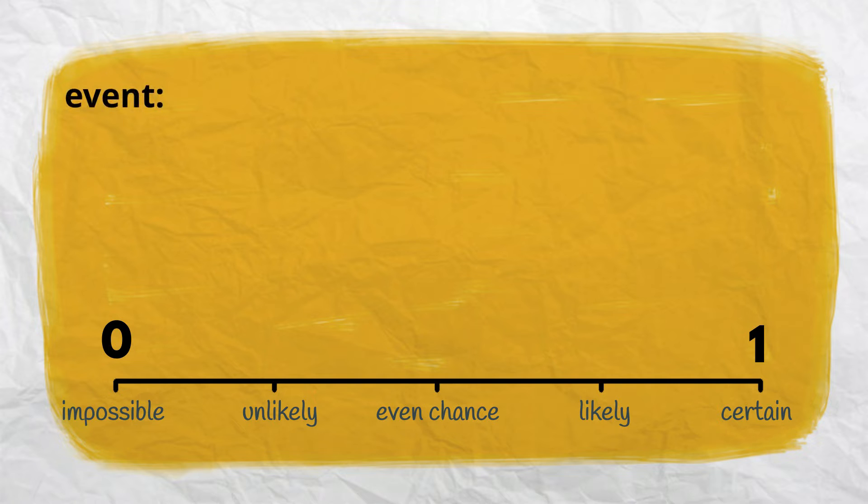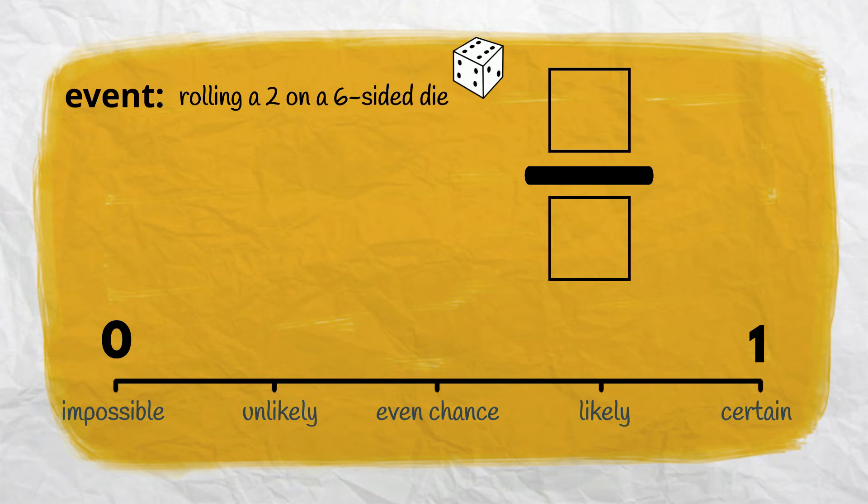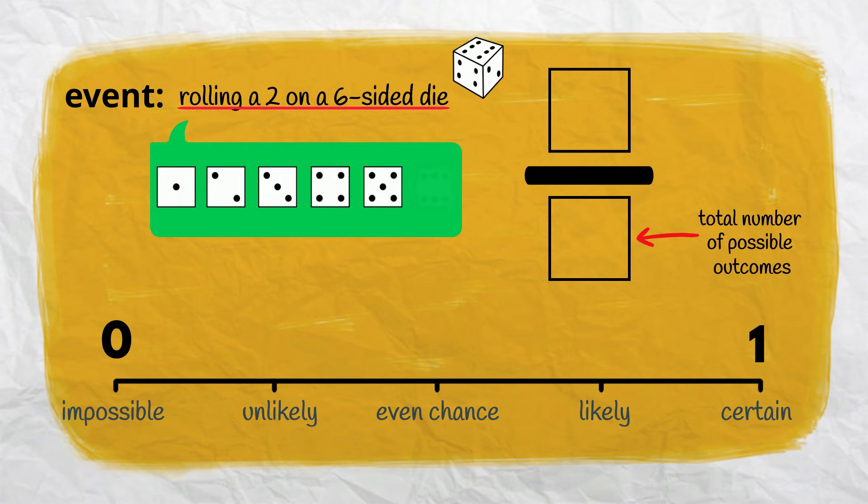Let's look at how we can express probability as a fraction, starting with this event: rolling a 2 on a six-sided die. Within the fraction, the denominator shows the total number of possible outcomes. In our event, the possible outcomes are rolling a 1, a 2, a 3, a 4, a 5, or a 6. There are six possible outcomes, so our denominator is 6.